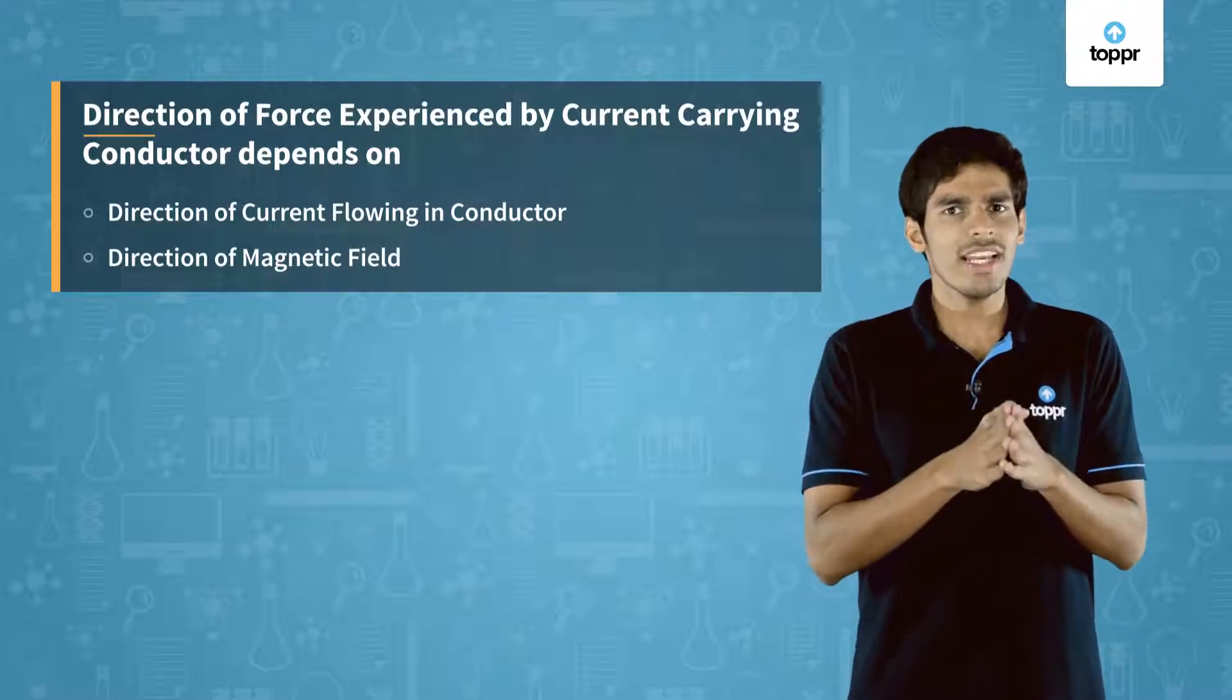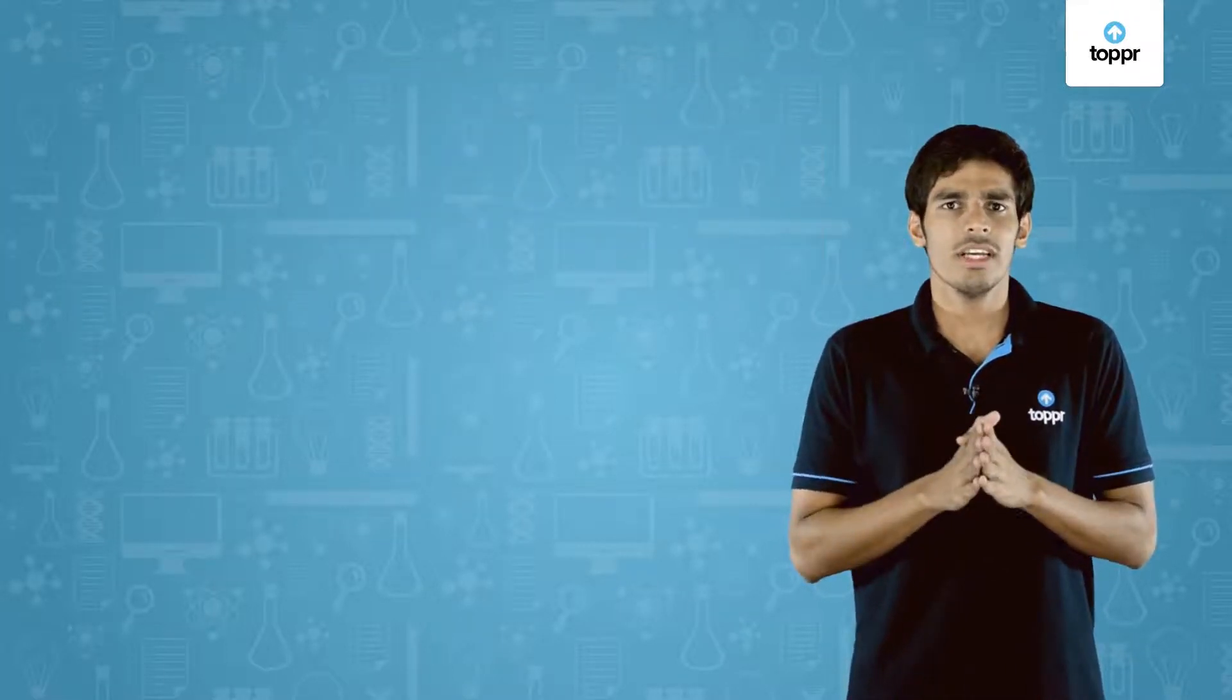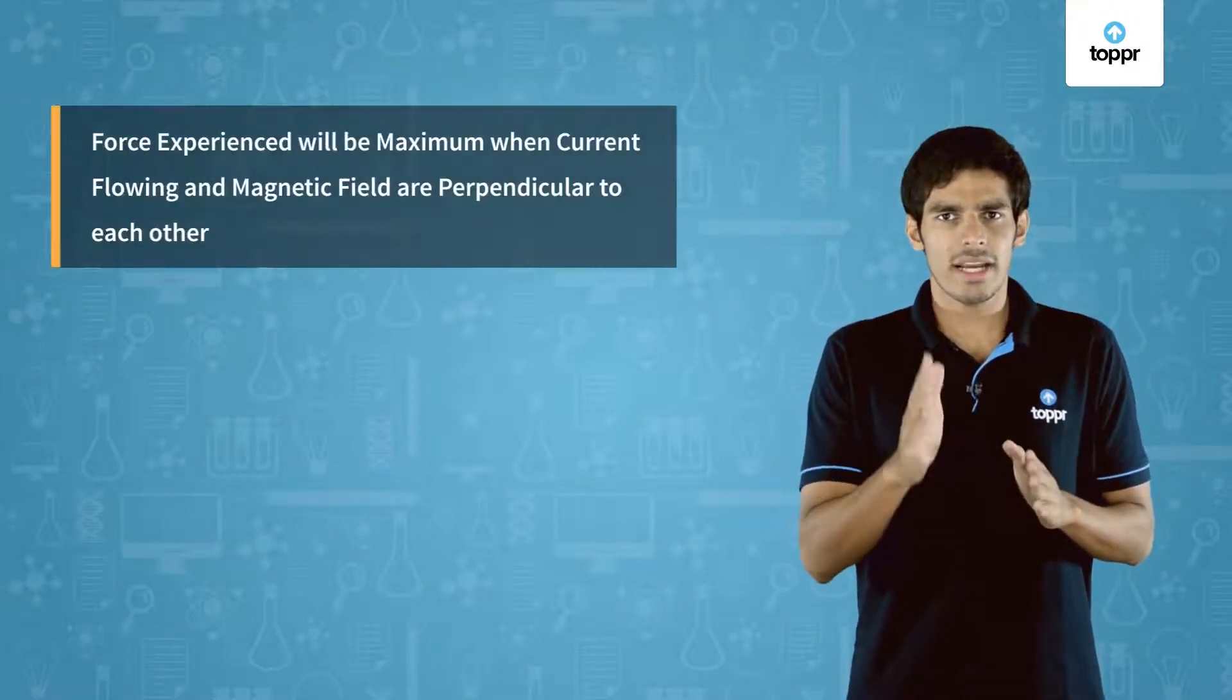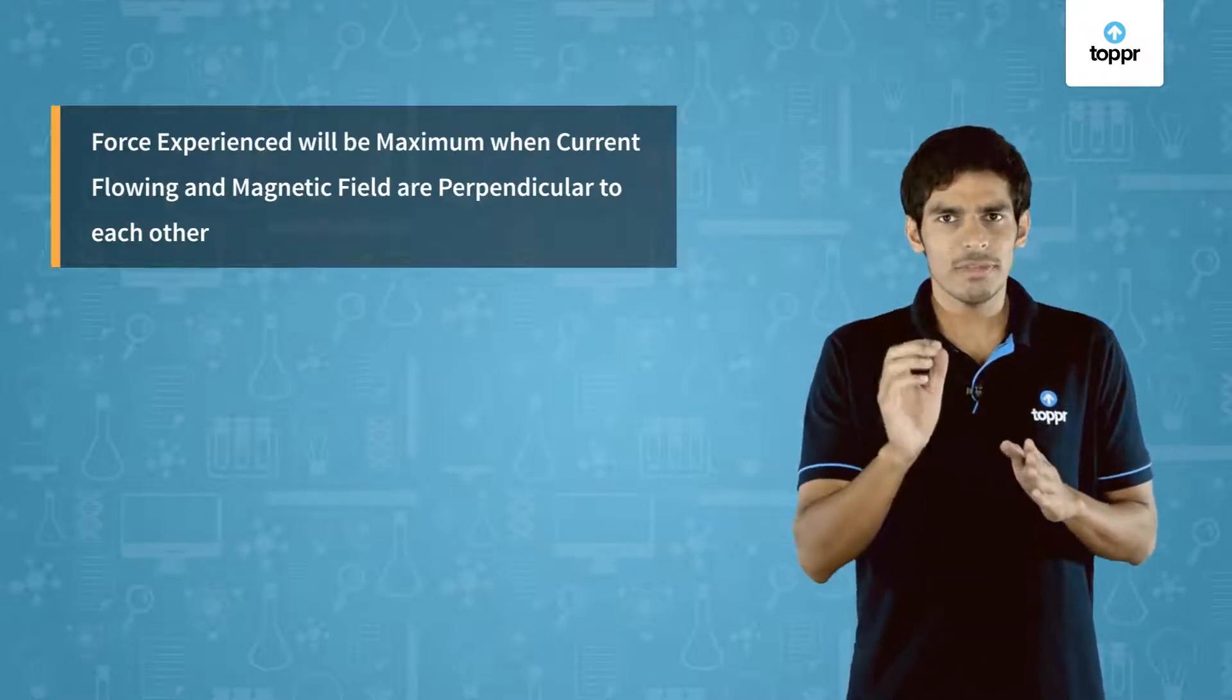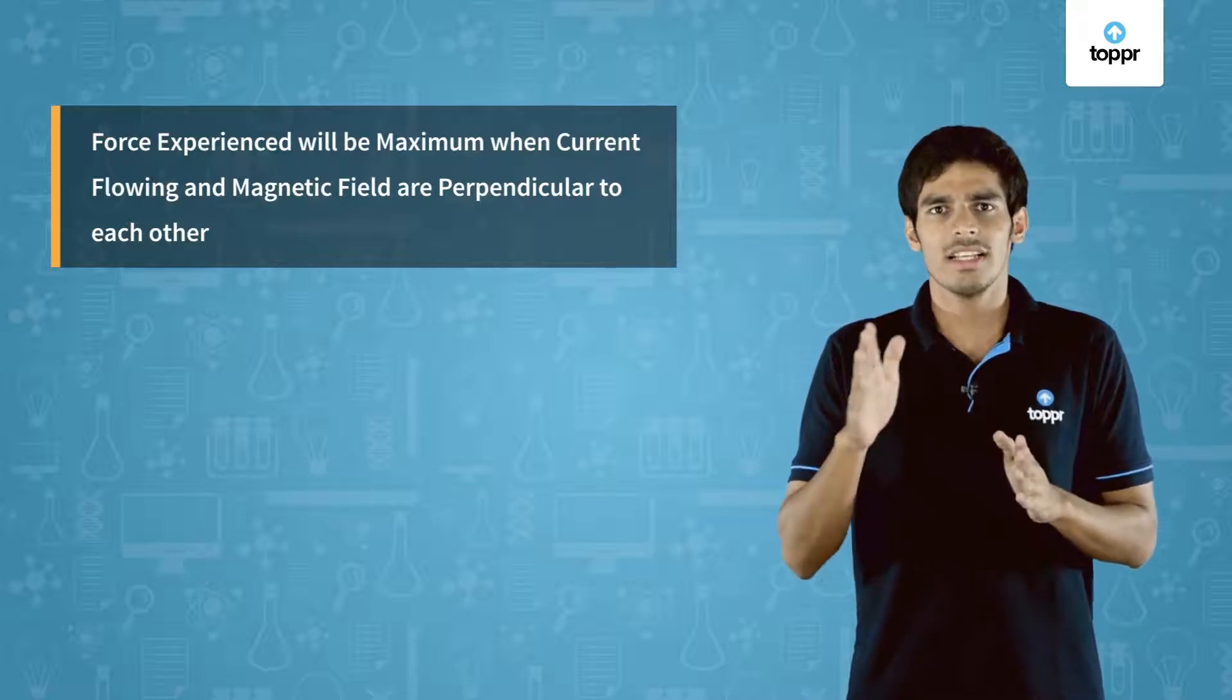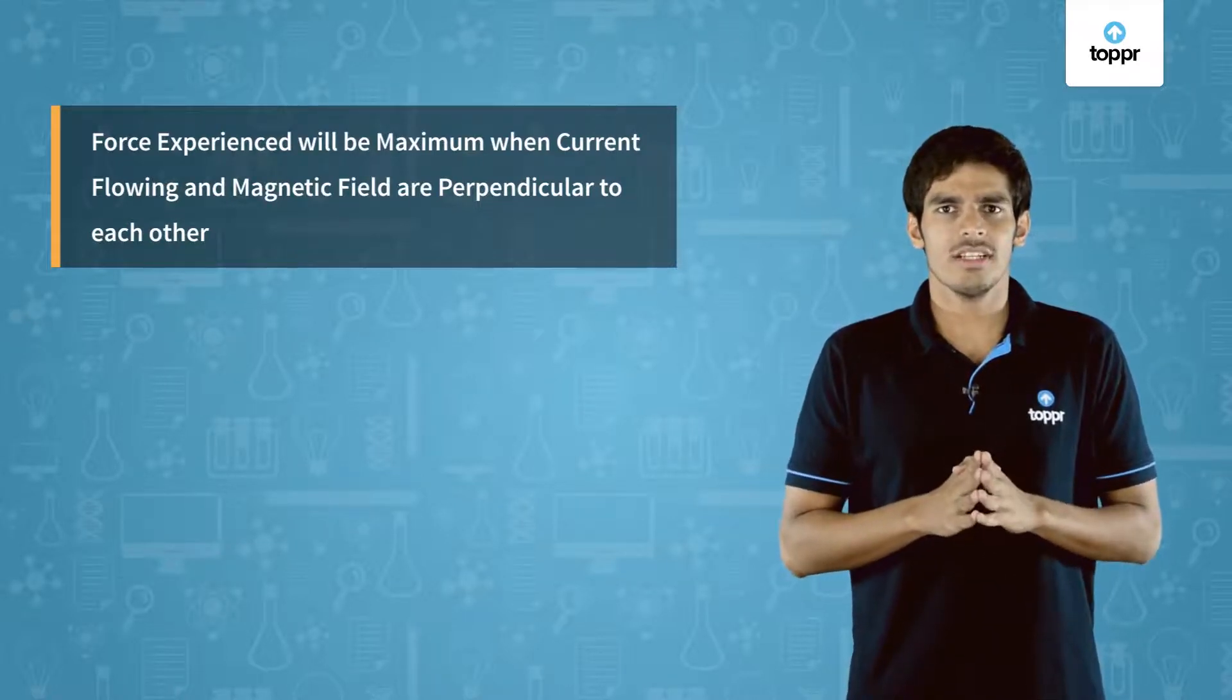Also, from various experiments scientists performed, they concluded that the magnitude of force experienced by a current carrying conductor is maximum when the direction of magnetic field and current are perpendicular to each other.